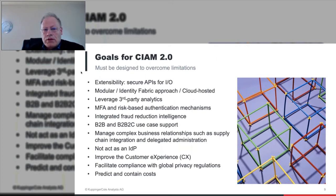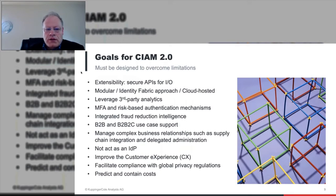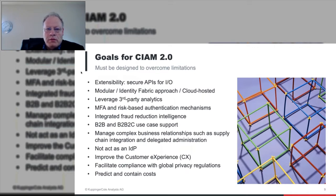We need to be able to leverage third-party analytics. Early CIAM tried to do all of that within the platform, but it's better to use specialty programs, especially if your organization already has licenses for data analytics or marketing automation — you want to be able to use what you have. MFA and risk-based authentication — we definitely need to have stronger forms of authentication. They're also more usable, and integrated fraud reduction intelligence is increasing in importance, not only for banking and retail but across every industry.